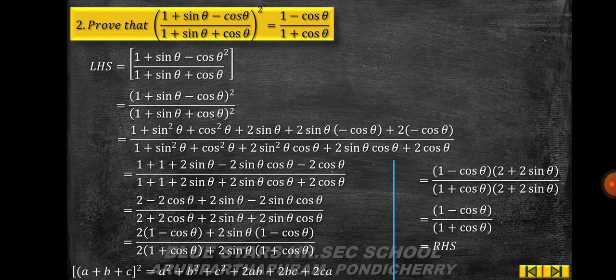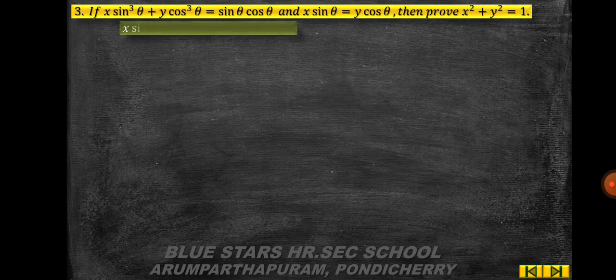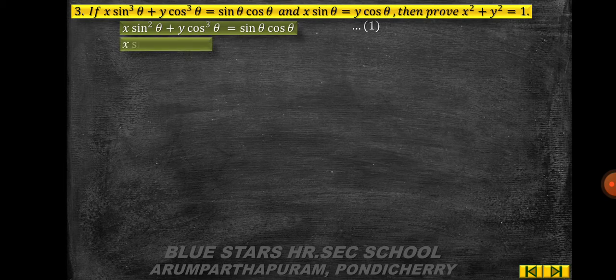Problem 3: if x·sin³θ + y·cos³θ = sinθ·cosθ and x·sinθ = y·cosθ, prove that x² + y² = 1. Let equation 1 be x·sin³θ + y·cos³θ = sinθ·cosθ and equation 2 be x·sinθ = y·cosθ.